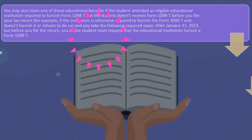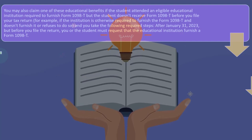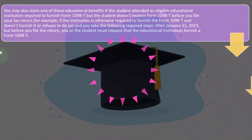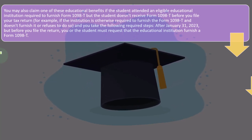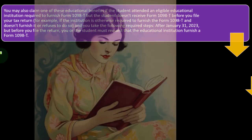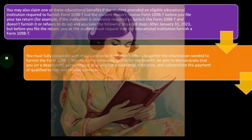You may also claim one of these educational benefits if the student attended an eligible educational institution required to furnish Form 1098-T, but the student doesn't receive it before filing the tax return. For example, if the institution is required to furnish the form but doesn't or refuses to do so, and you take the required steps after January 31st, 2023, or before you file, you or the student must request that the educational institution furnish a Form 1098-T. This is similar to a 1099 — if the issuer doesn't provide it or gets it wrong, you need to go to them and pressure them to issue the form properly, since the IRS receives it on their side too.